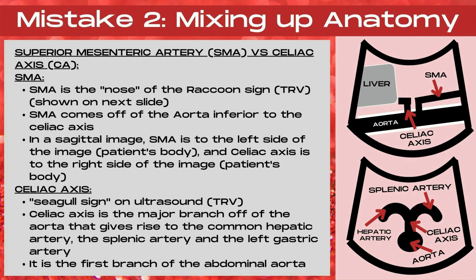The celiac axis is also known as the seagull sign on ultrasound when in a transverse plane. The celiac axis is the first major branch off of the abdominal aorta, and it's going to give rise to three branches: the common hepatic artery, the splenic artery, and the left gastric artery. The left gastric artery is challenging to visualize on ultrasound, so the wings of the seagull sign are going to be the hepatic artery and the splenic artery. In the top image, the celiac axis is the first major branch of the abdominal aorta seen below the liver, and the SMA is the second branch, inferior to the celiac axis.